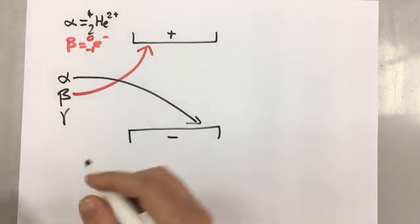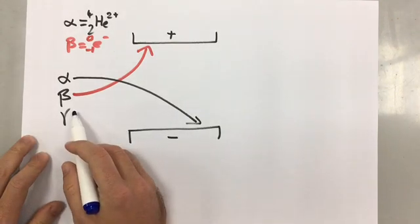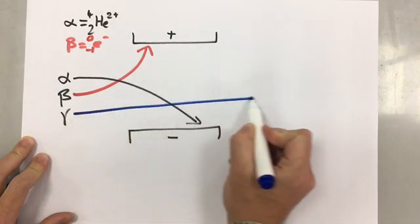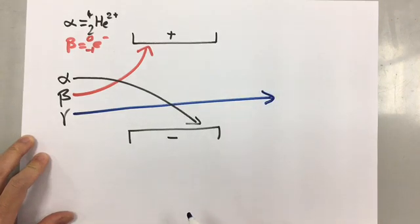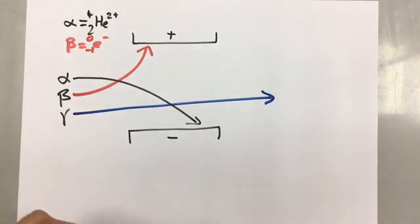The gamma ray - gamma rays are not particles and they have no charge. So the gamma ray is not going to be affected by the electric field at all. It's just going to keep on going straight.